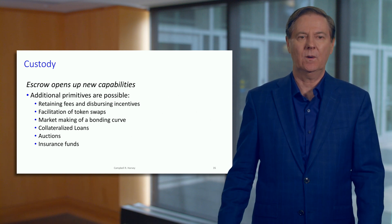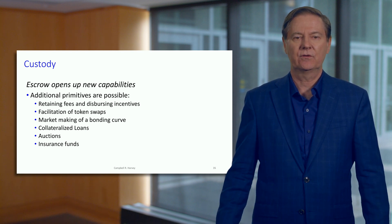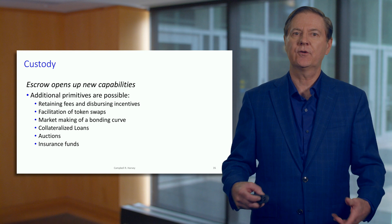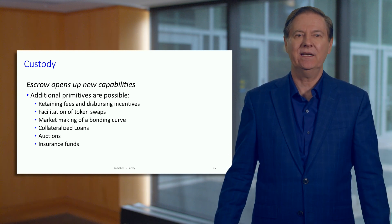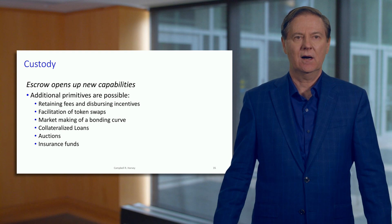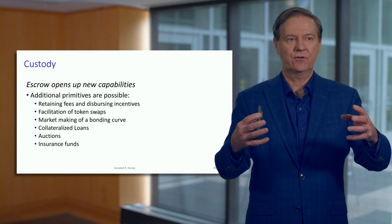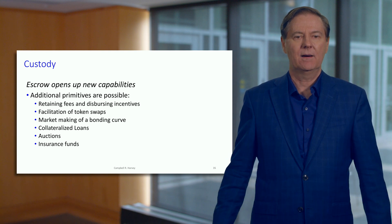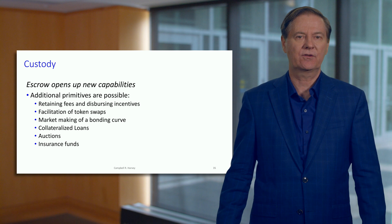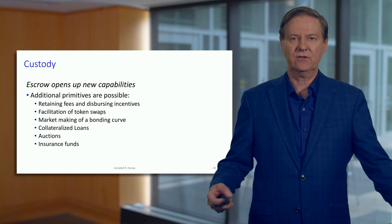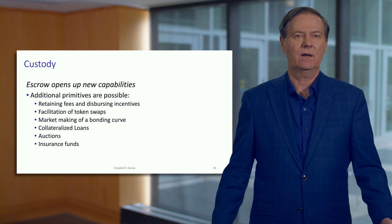This ability to escrow opens up so many possibilities. We can retain fees within the contract, we can disperse incentives, we can facilitate token swaps — think of this as a contract that's got something in it already and you're swapping within that contract. We'll talk in some detail today about bonding curves and what that actually means. We can do collateralized loans, we can run auctions, we can even do insurance. Custody in terms of escrow opens up so many possibilities.